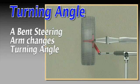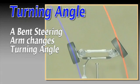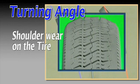If a steering arm is bent, turning angle will change. Large turning angle errors may lead to irregular shoulder wear on the front tires.